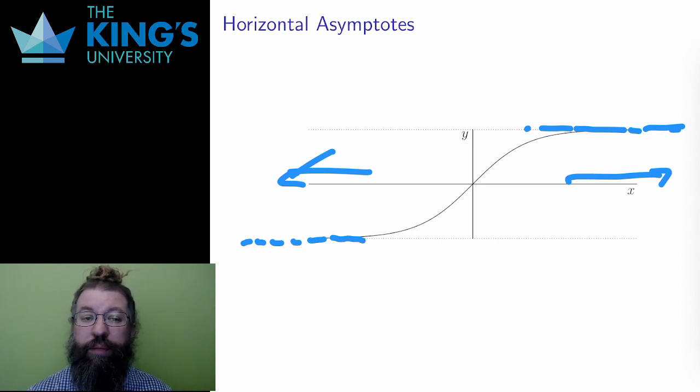Note in the graph that the horizontal asymptote can be different in the positive or negative direction. The function doesn't have to level off to the same value in both directions.